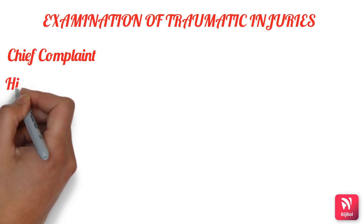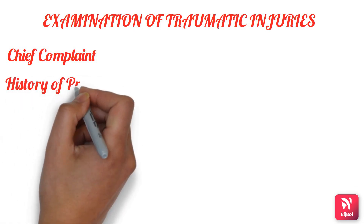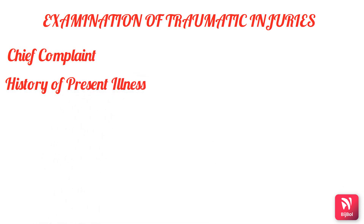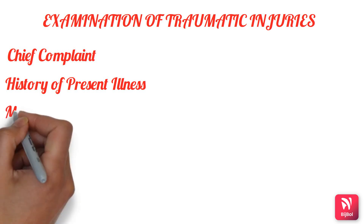In the history of present illness, when, how, and where the trauma occurred are significant. Trauma to the lips and anterior teeth can cause crown, root, or bone fracture of the anterior teeth without injury to the posterior region. It is also important to ask whether any treatment was given elsewhere before coming to the dental office.